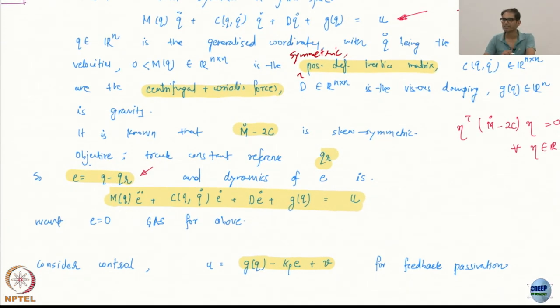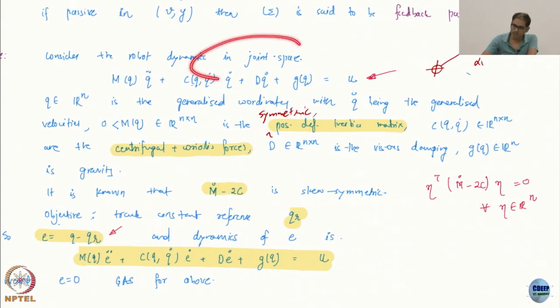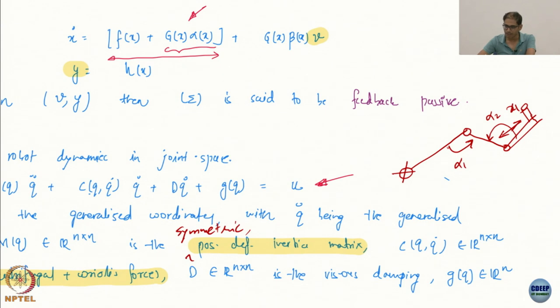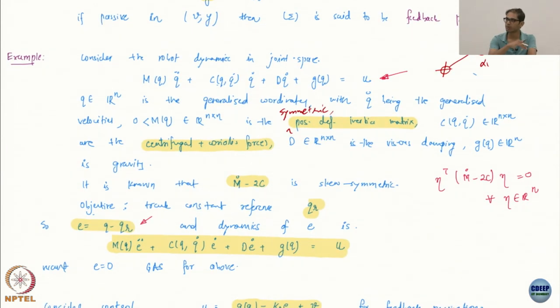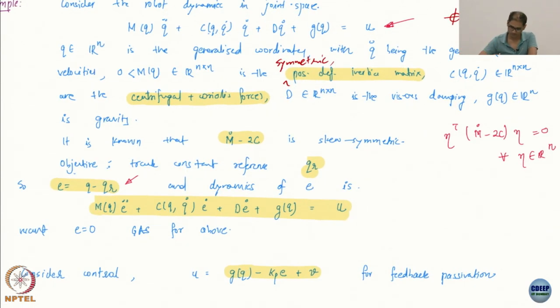So typically somebody who's been working on these systems for a while, they will know these. What is the objective? Tracking. We've until now not done any tracking problem. So this is the first tracking problem. What is the objective? Track a reference q of r. Again, this reference and we are doing everything in the joint space, by the way. In reality, you might be applied guys might be interested in the position of this guy, the world position, what is called the end effector position.